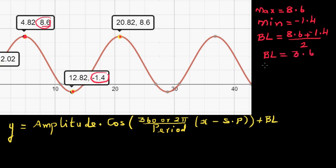The amplitude is the distance between the baseline and the maximum or minimum. So from 3.6 to 8.6, the amplitude is 5. The distance is 5.